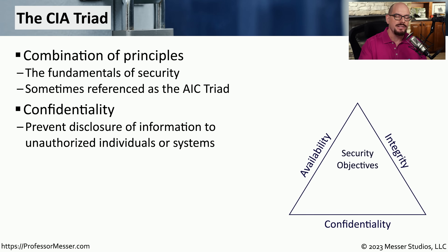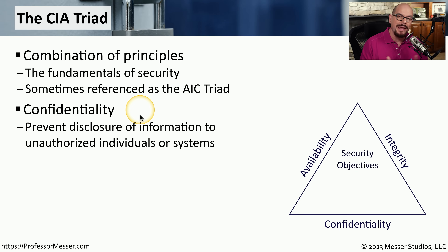The C in the CIA triad is confidentiality. We want to prevent someone from gaining access to private information. We need to provide that information in a confidential way.